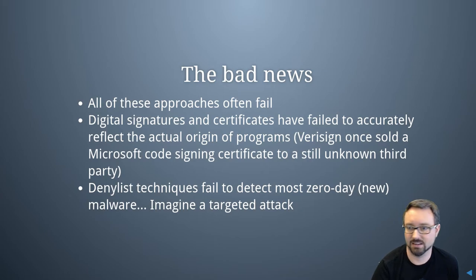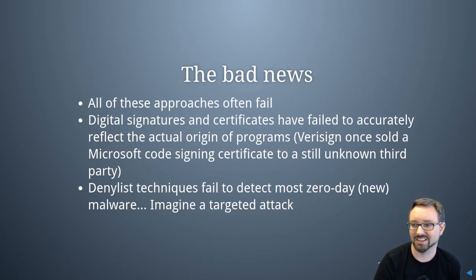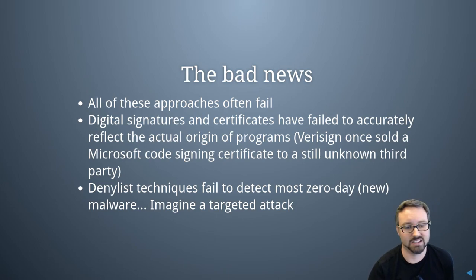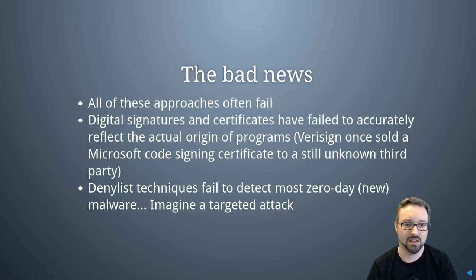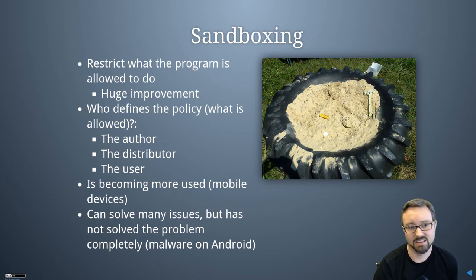The bad news is that all of these approaches often fail. Digital signatures and certificates have failed to accurately reflect the actual origin of programs — VeriSign once sold a Microsoft code signing certificate to an unknown third party. Deny list techniques often fail to detect zero-day malware — new malware that hasn't been seen before. In a targeted attack, an attacker could write brand new malware that behaves differently from anything used before, and it wouldn't be detected by the majority of anti-malware software.